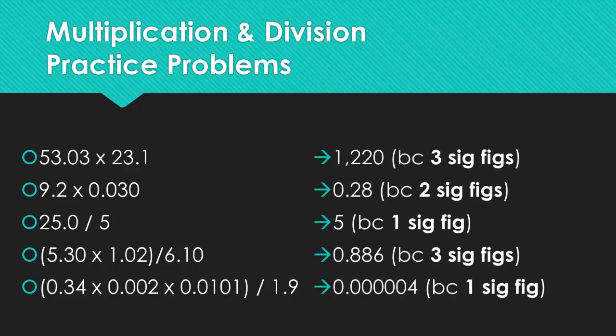Okay, so you'll notice that the first answer is 1,220, which has 3 significant figures because that last 0 is a trailing 0 and does not count. And it's because we have 3 significant figures in the 23.1.